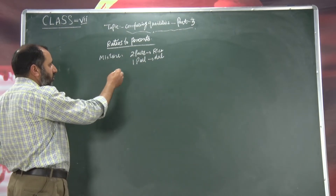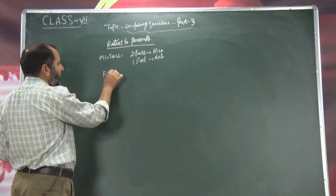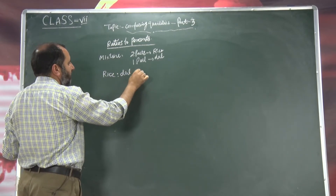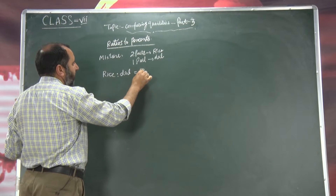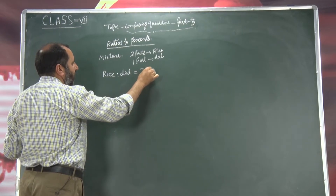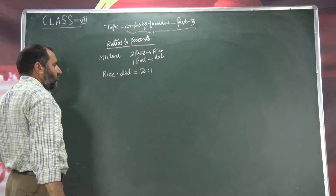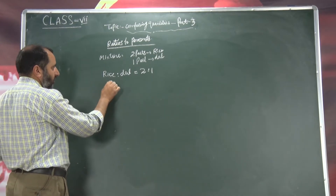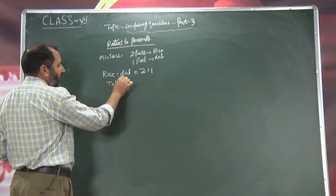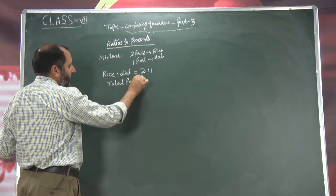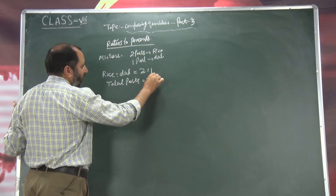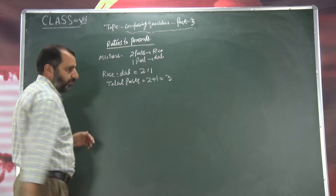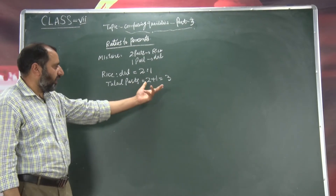Pehle hum isko ratio mein convert karingi. Rice is to dal — it is two is to one. Ab hamein dekhi ki total parts kya hai. Two pot rice ke hai, aur one pot dal ka hai, two plus one, that is equal to three. Two plus one — that is the total.